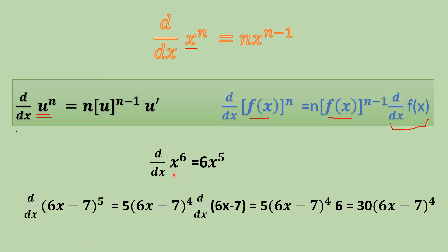For example, the derivative of x to the power 6 is simply 6x to the power 5 by the normal power rule. Now for the chain rule: the derivative of (6x minus 7) raised to the power 5. The power 5 comes in the beginning, then (6x minus 7) with the power reduced to 4. This is multiplied by the derivative of (6x minus 7), which is 6. Multiplying 5 by 6 gives 30, so the answer is 30(6x minus 7) raised to the power 4.